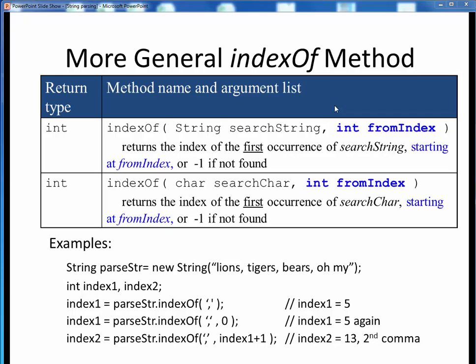Before we can get to the action of parsing, there are a couple more string capabilities that we need first. Here is another look at the indexOf method, which as you recall, finds the location of a specified search string or search character. The earlier version we saw, however, didn't include the second input argument. In this overloaded version of the method, we can also specify the index position in the string from which to begin searching.